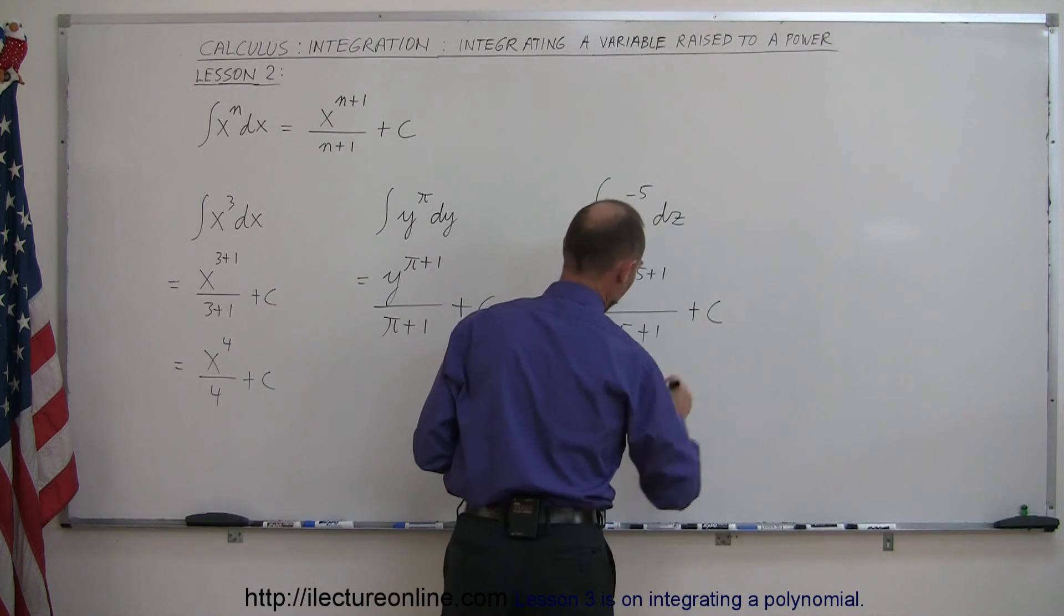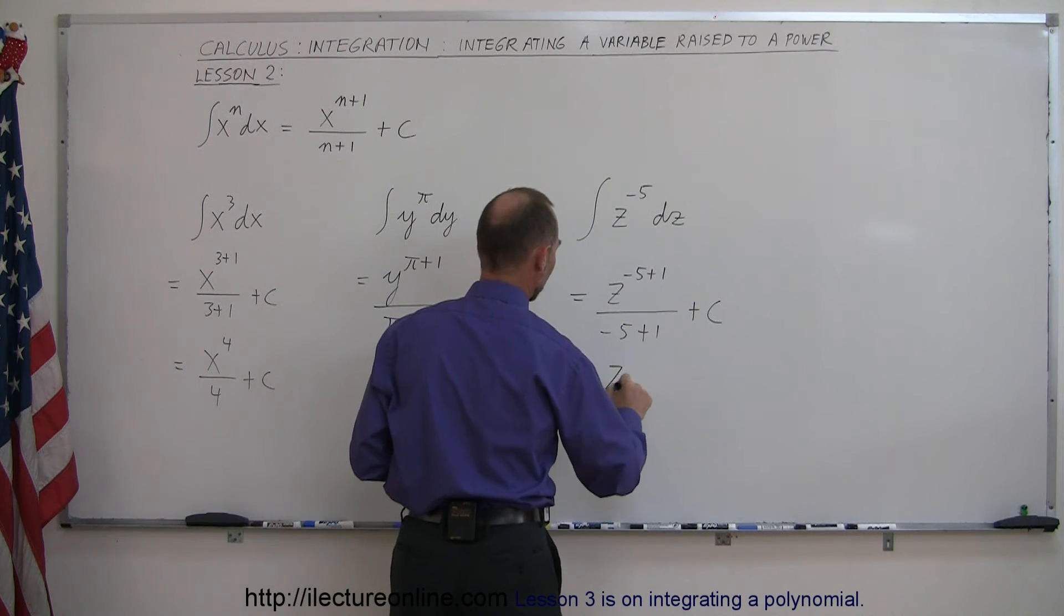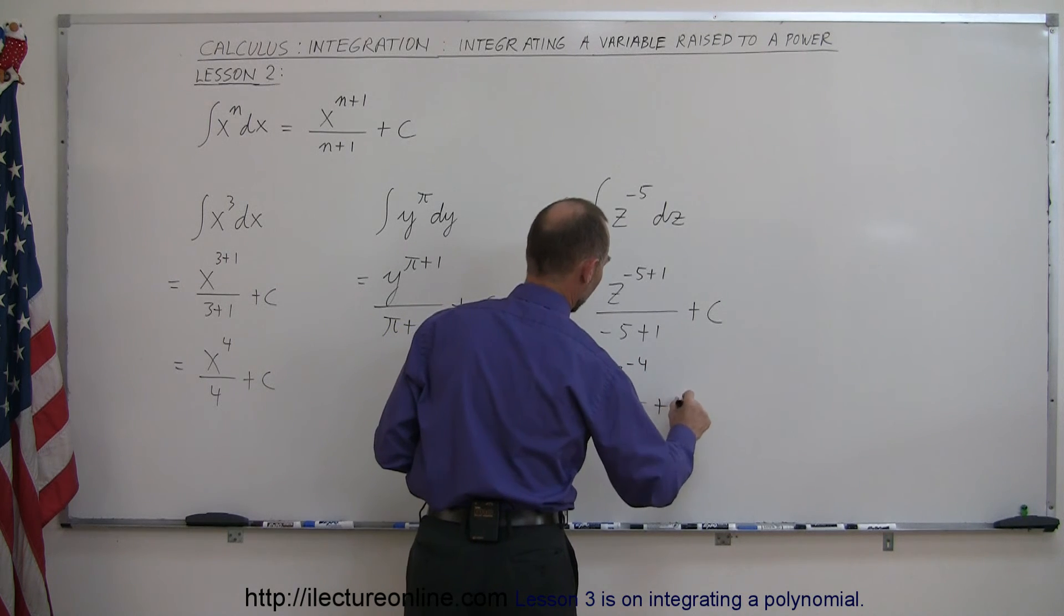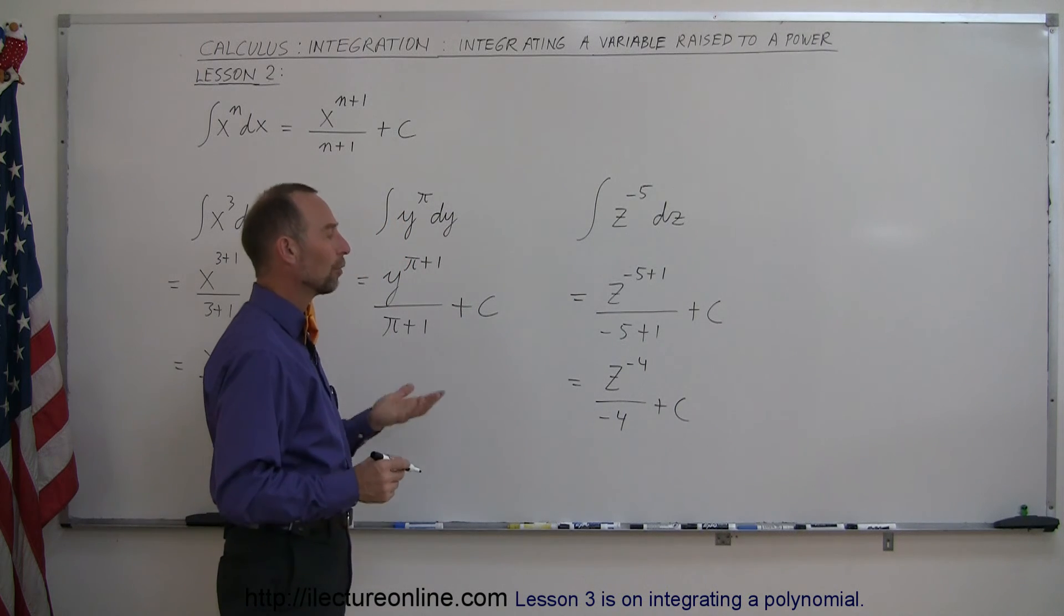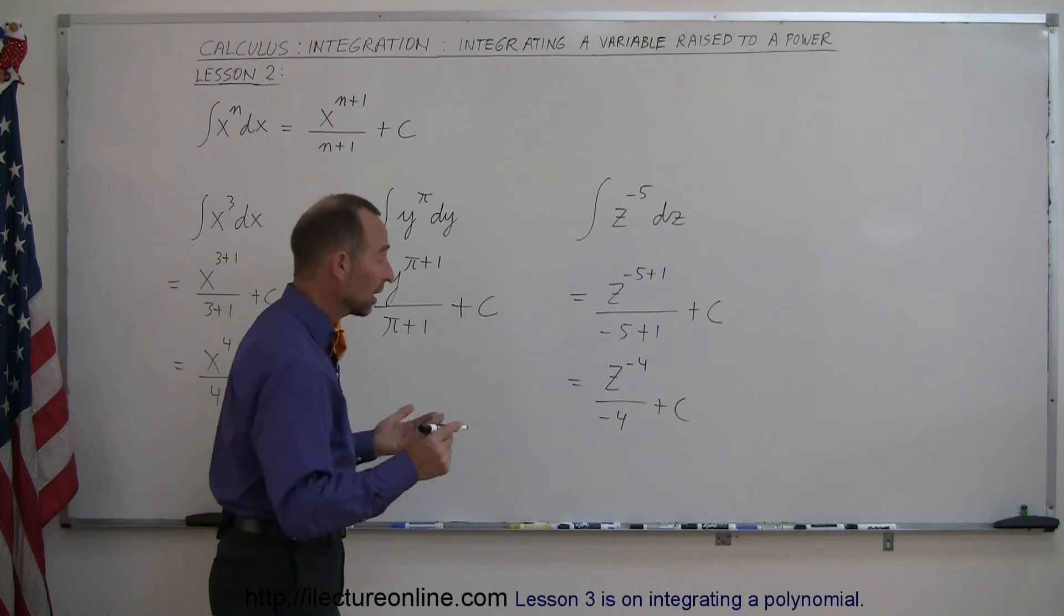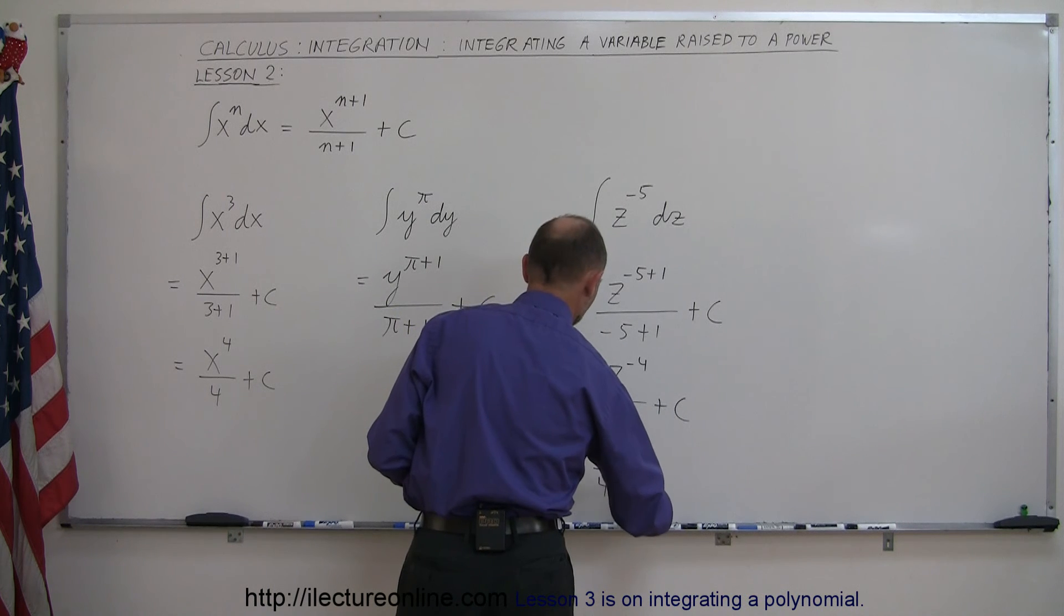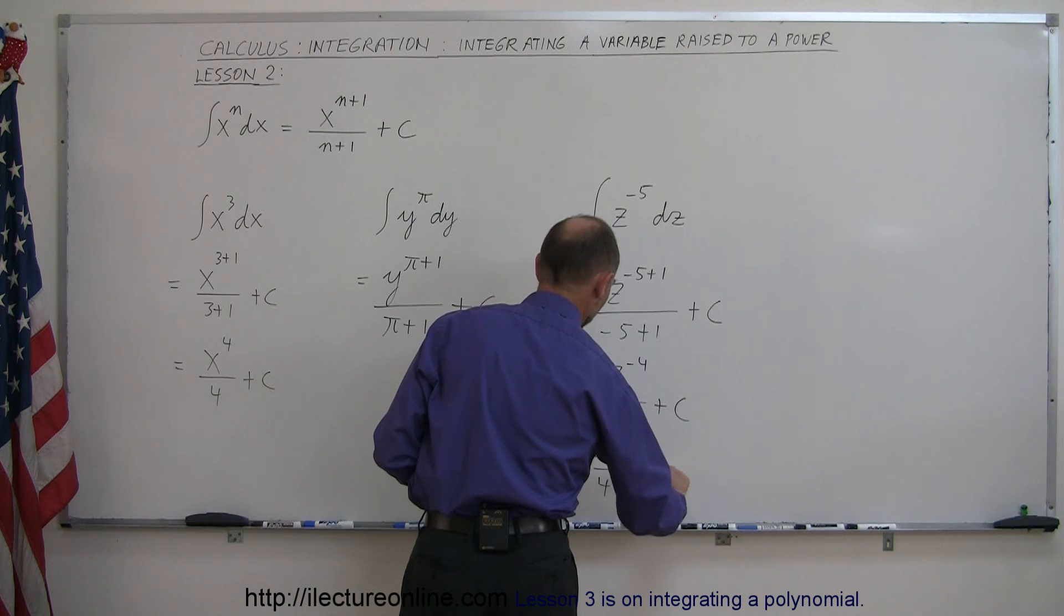And so this becomes z to the minus four power divided by minus four plus c. You could write that as one over z to the positive four power. So this could be written as minus one over four times z to the fourth power plus c.